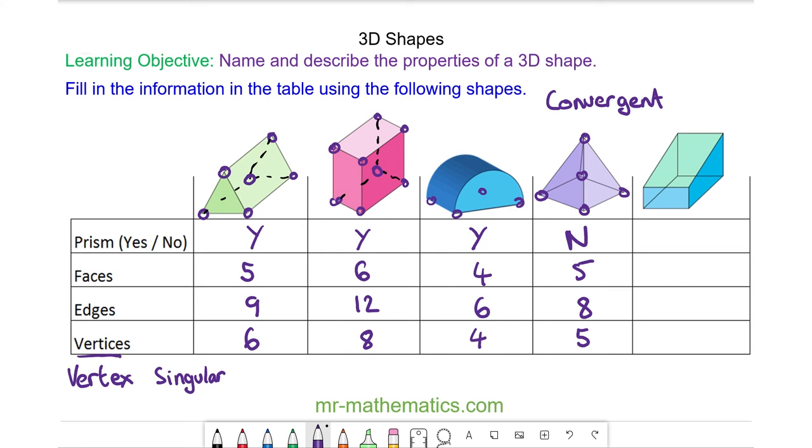And finally, yes this shape is a prism because this is the cross section and you can see it is repeated throughout the shape in this direction. So the back is congruent to the front. So yes it is a prism. In terms of faces it has one at the top, one at the bottom, one at the left, one at the right, one at the front and one at the back. So six faces in total. And edges it has one, two, three, four, five, six, seven, eight, nine, ten, eleven and twelve. And vertices it has got four at the front and four at the back which is eight.